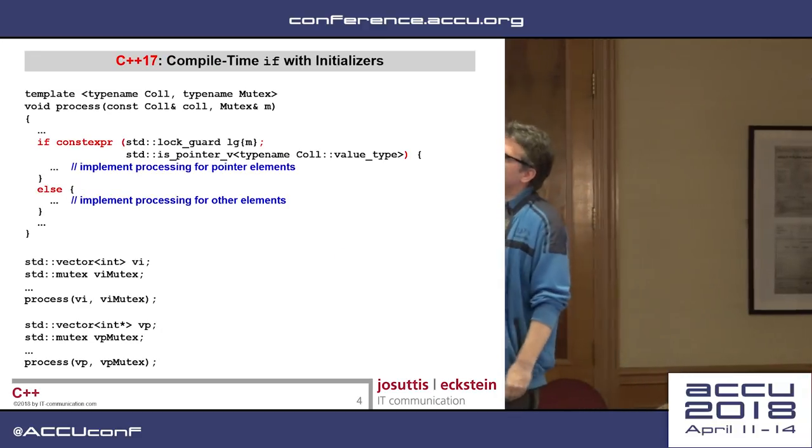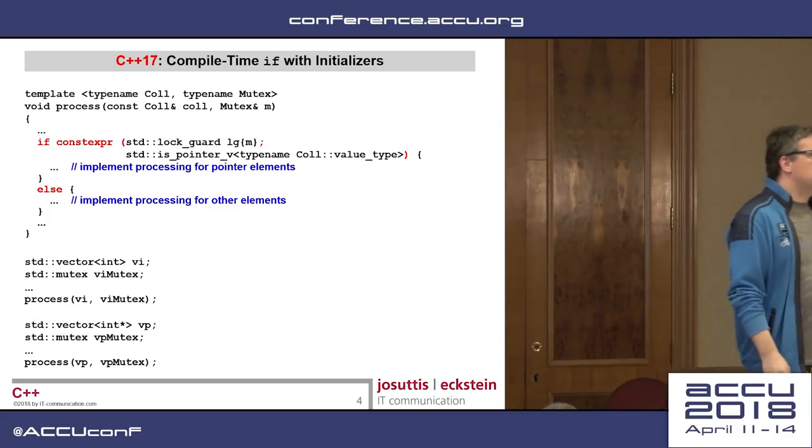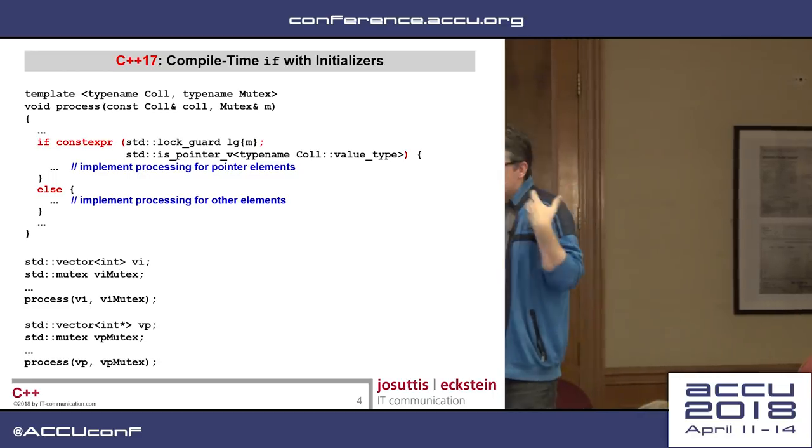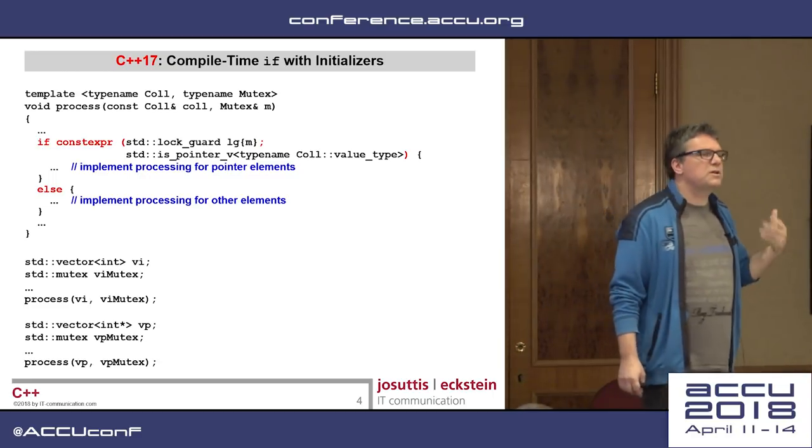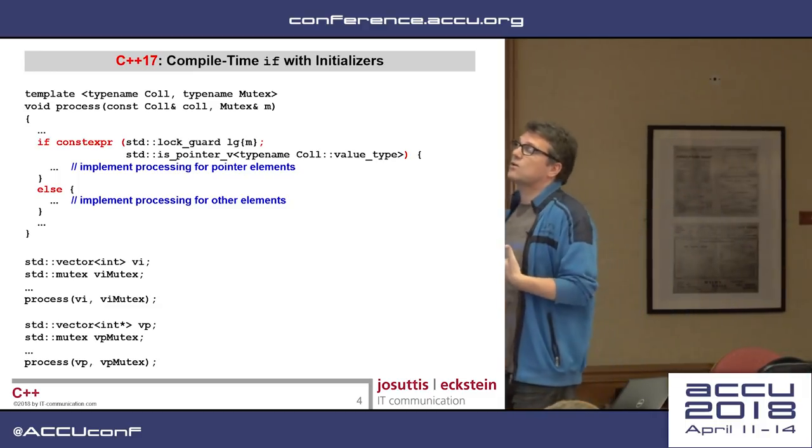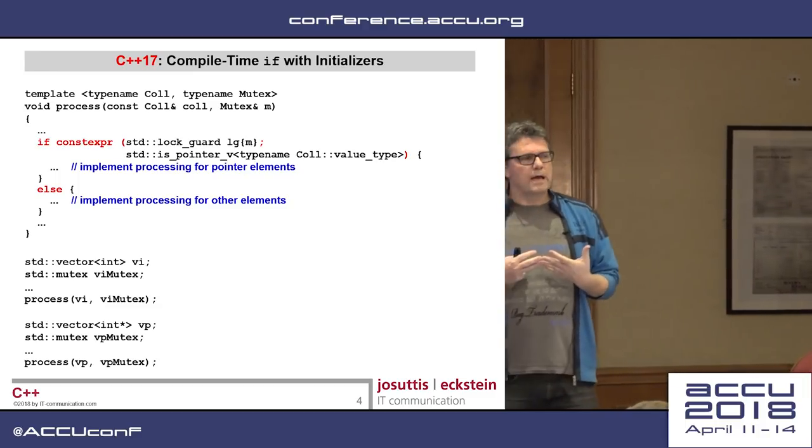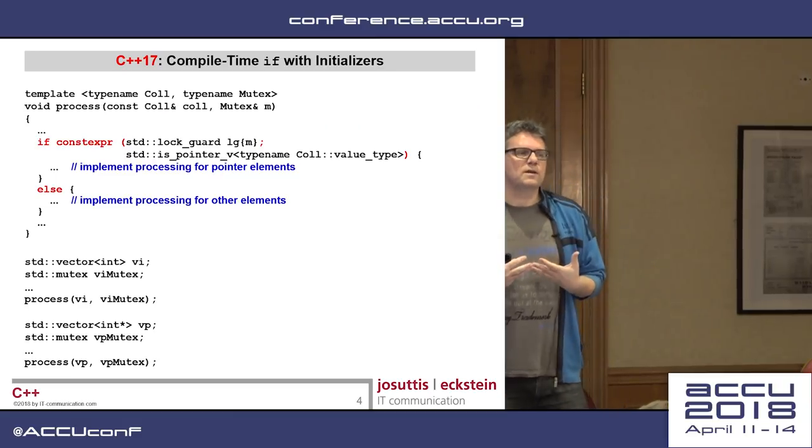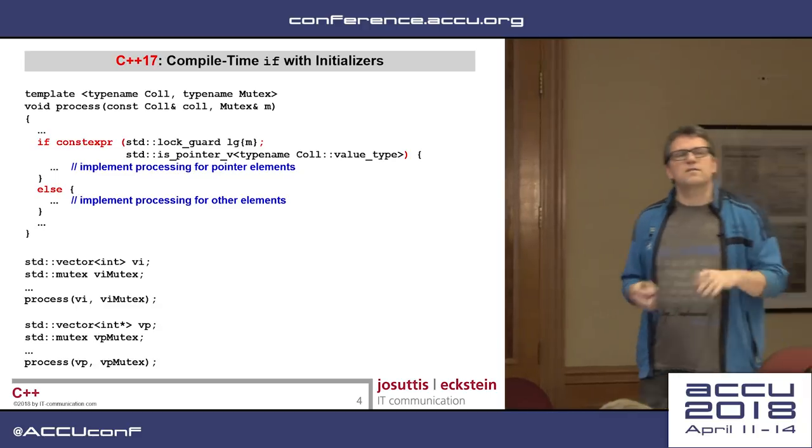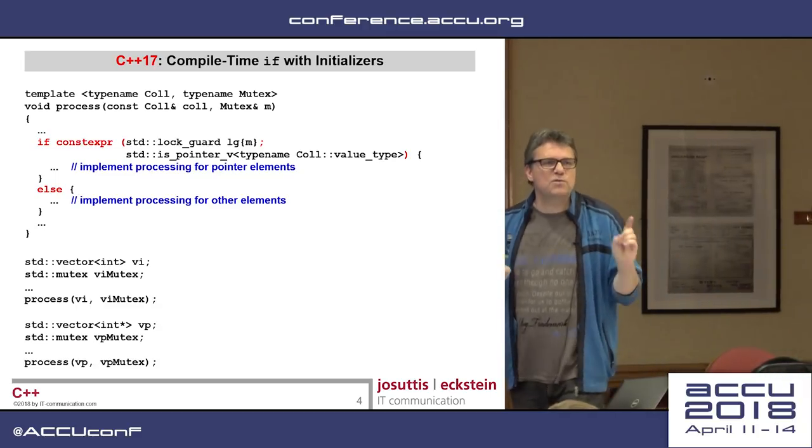So you can combine this with another feature, which is the ability to have conditional checks at compile time with an initialization. We also have this feature. And this is the core of my talk here. It's not that C++17, the best thing is just one feature. The best thing is a combination of multiple new features.